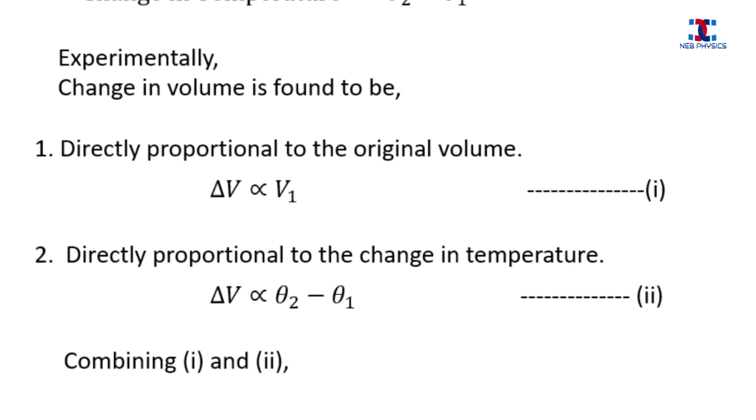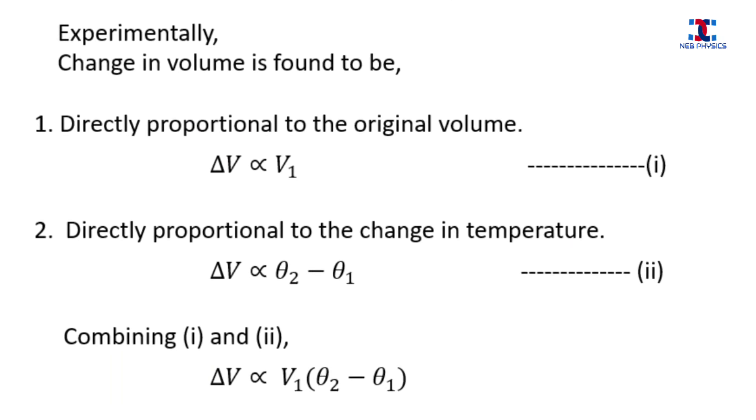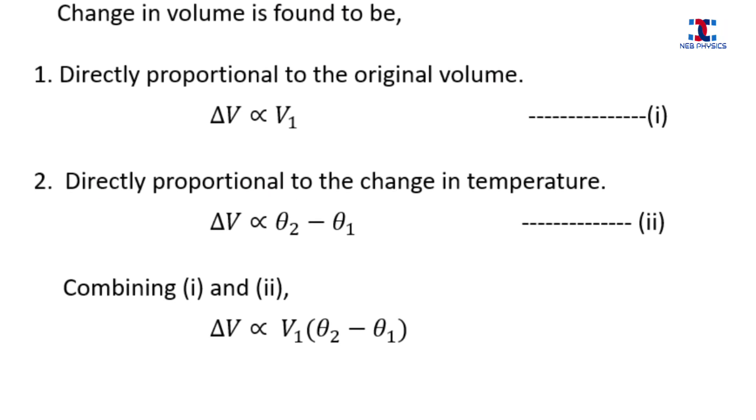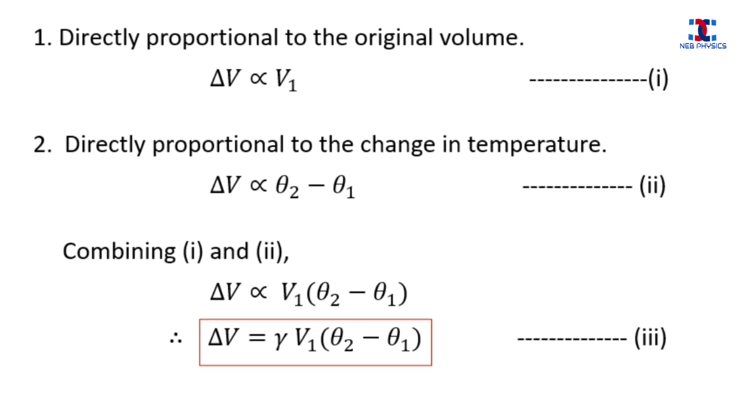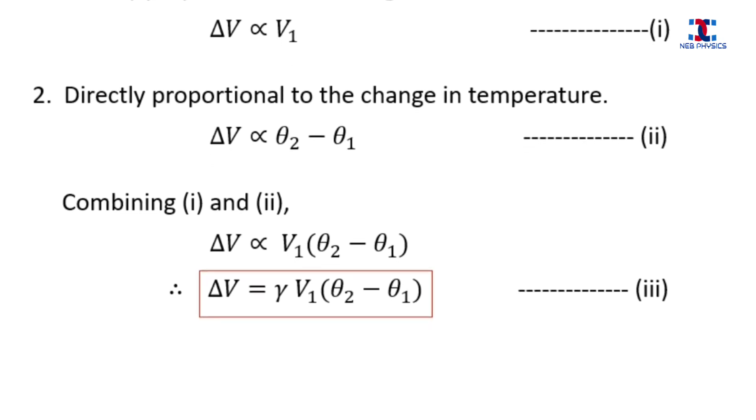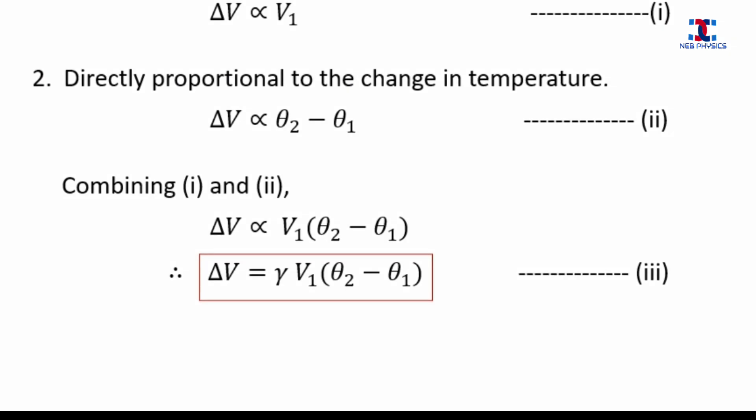When we combine equation 1 and 2, we get Delta V is proportional to V1 times Theta 2 minus Theta 1. This equation can be written as Delta V is equal to Gamma V1 times Theta 2 minus Theta 1.